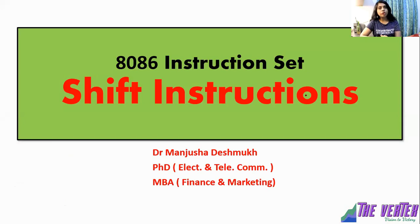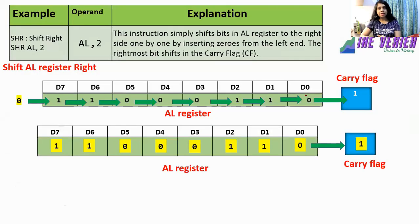In this video I am going to explain shift instructions of the 8086 microprocessor. The first instruction is SHR, which stands for shift right. Its format is SHR AL, 2 where these are the operands — AL and 2. In place of AL you can write any register.